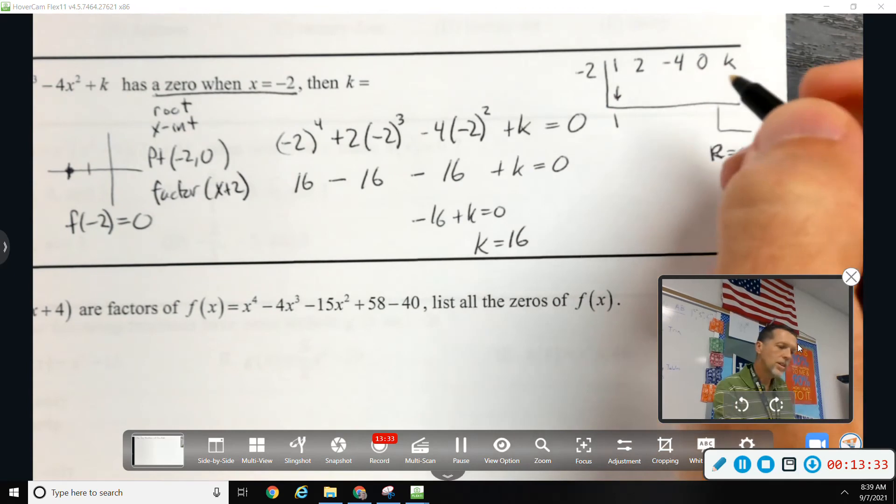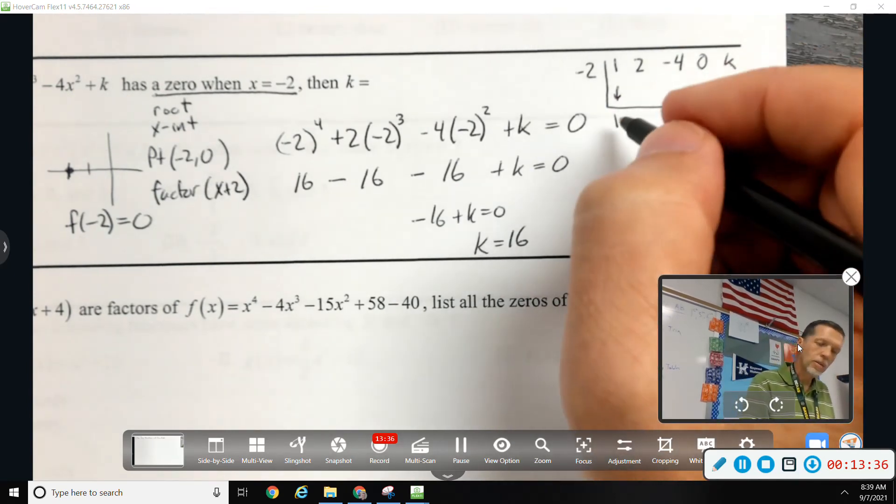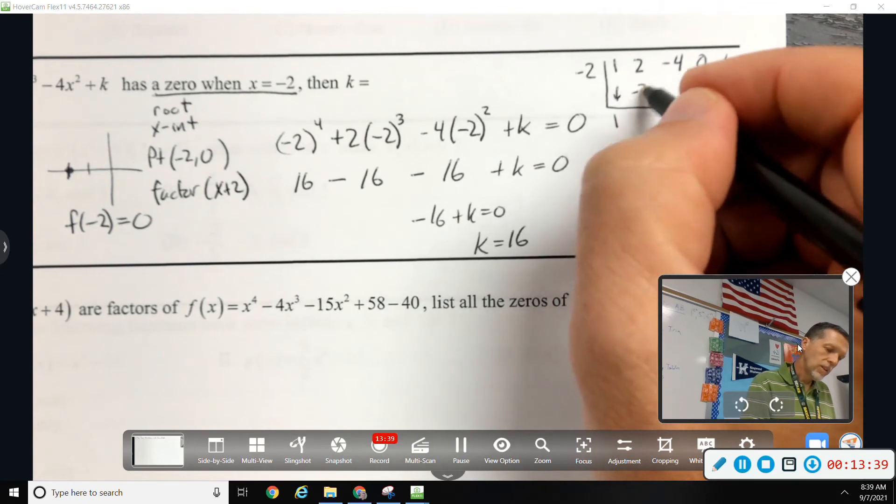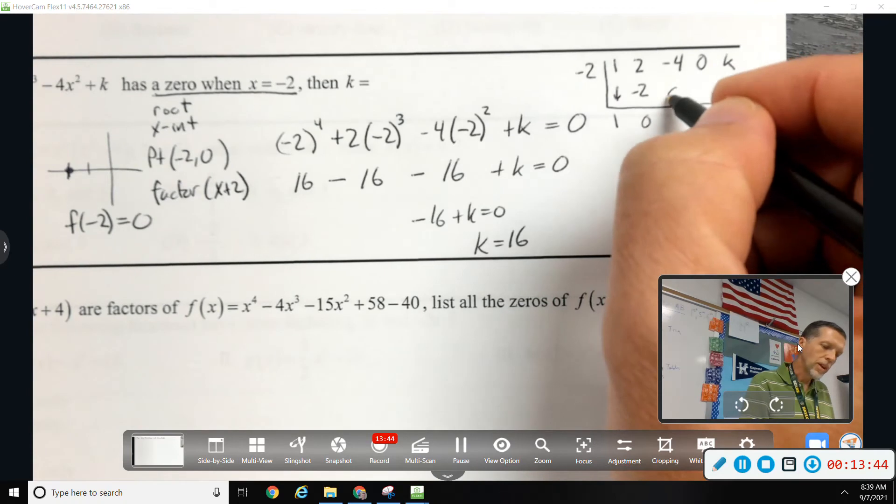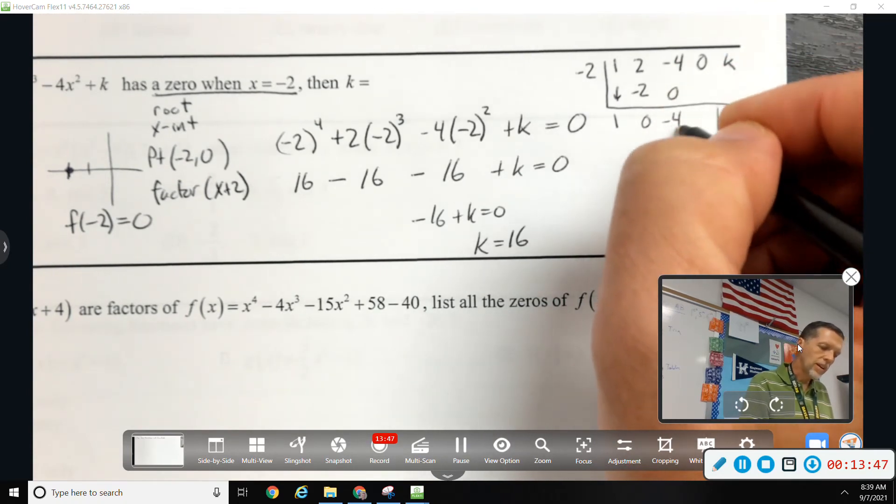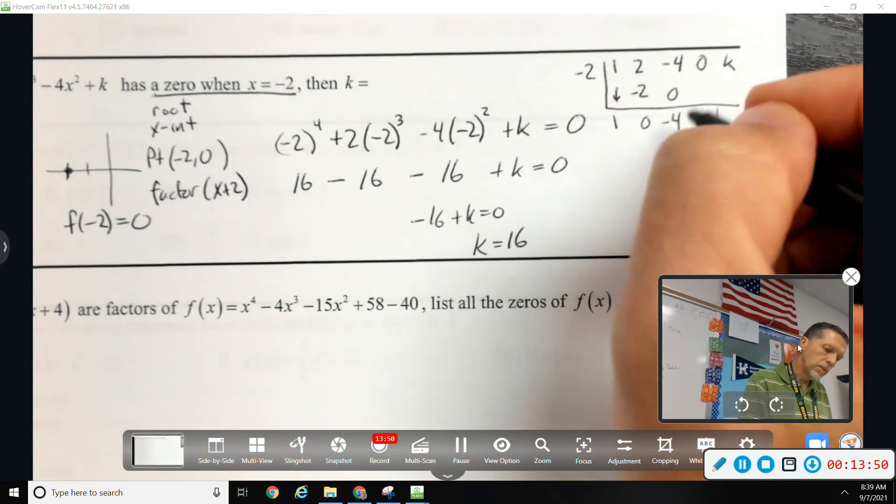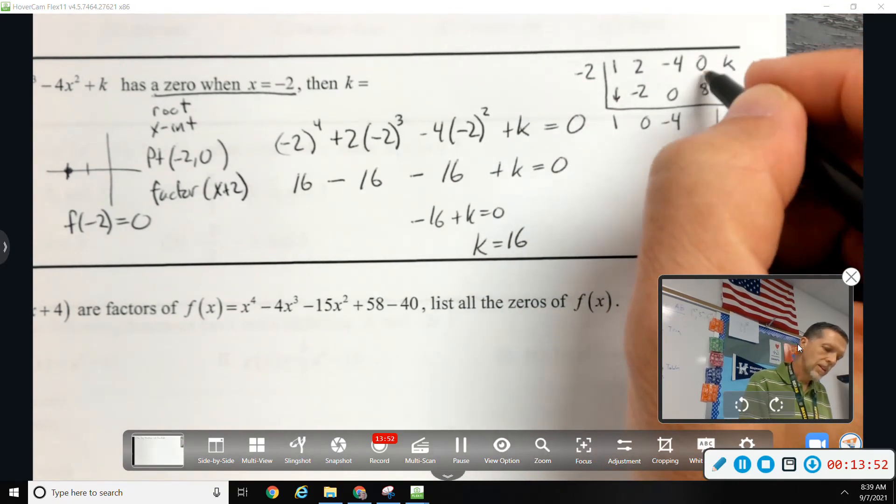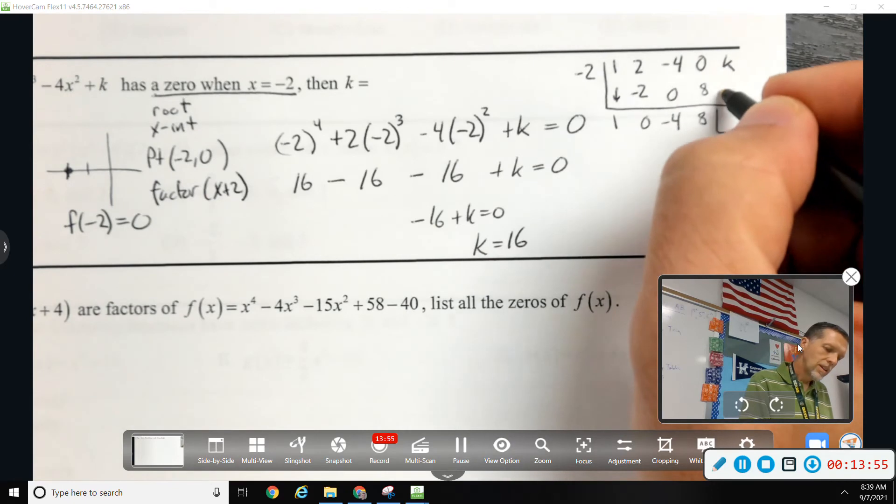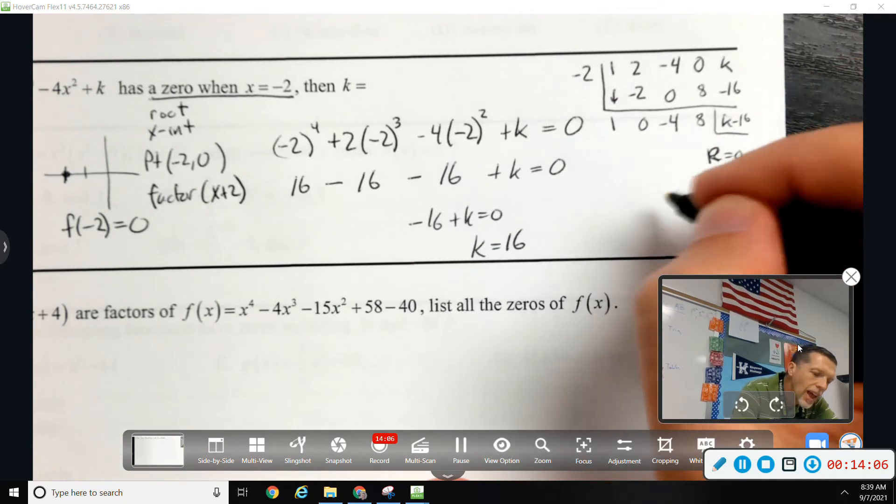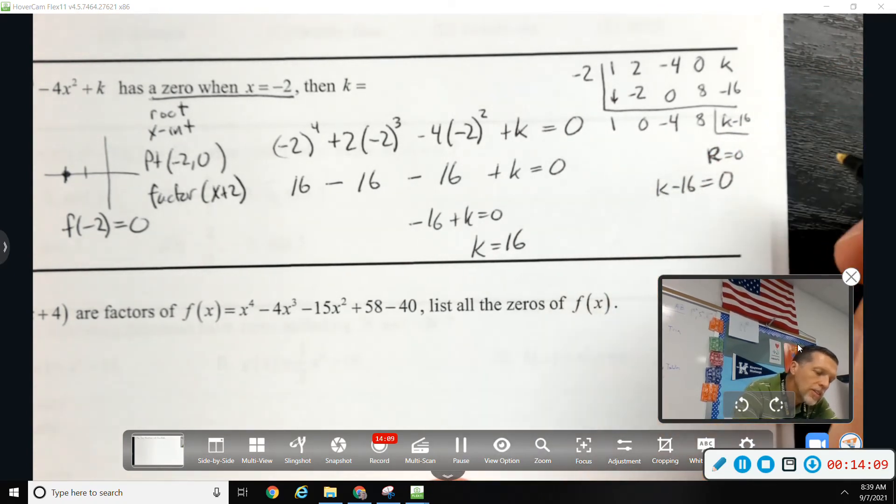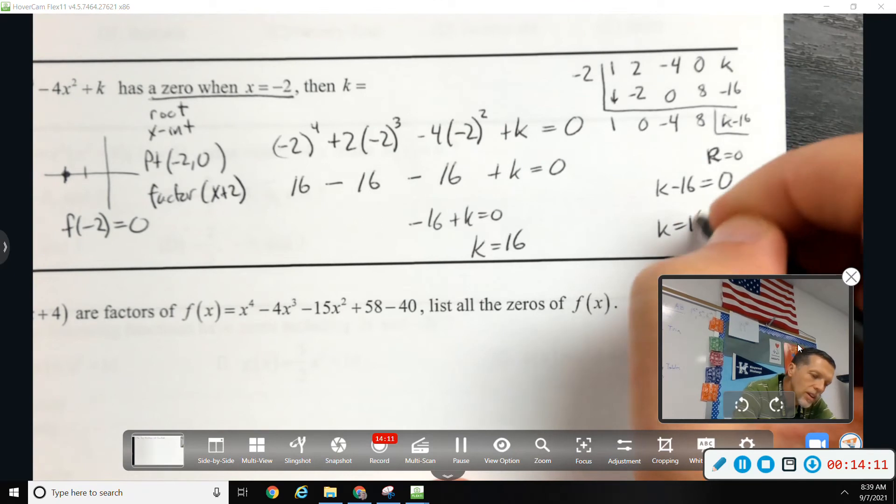Bring down the 1. This is good because this gets a synthetic division problem. 1 times negative 2 is negative 2. Add, then we get 0. Multiply, we get 0. Add, then we get negative 4. Multiply, we get 8. Add, then we get 8. Multiply, we get negative 16. And how do I add K and negative 16? K minus 16. And K minus 16 is supposed to equal 0 if this thing is a root. So, K equals 16.